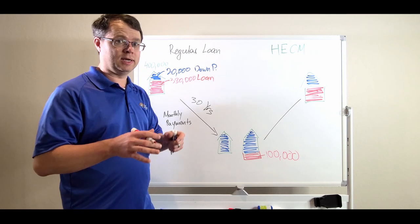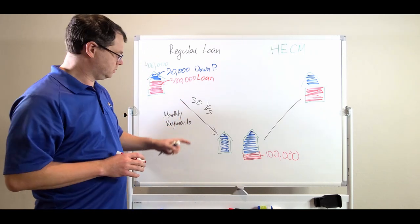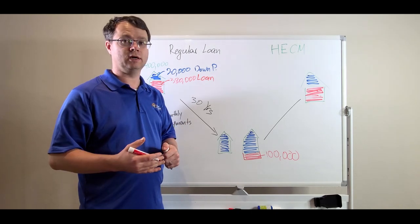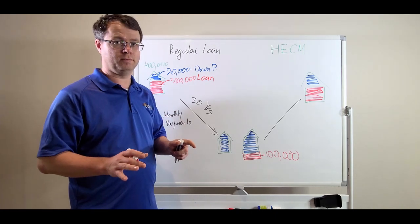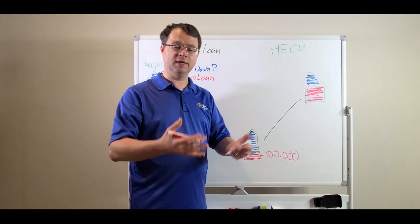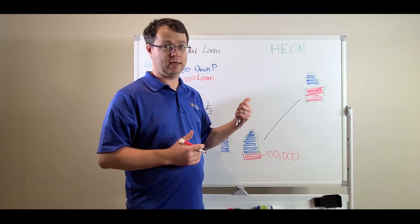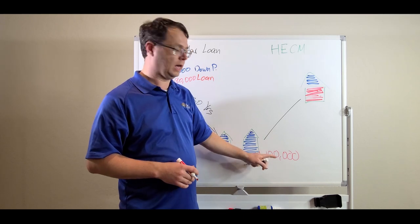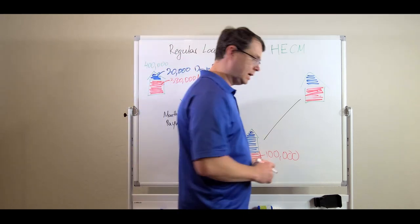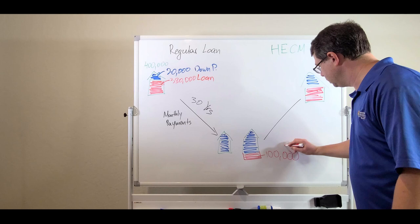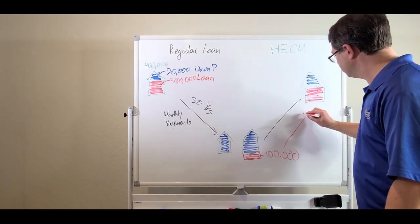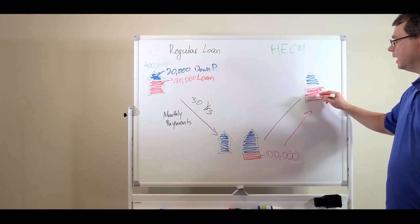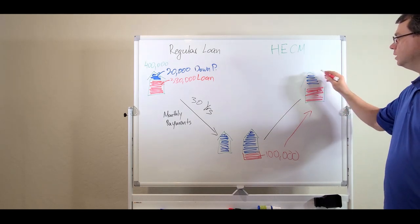Now, with HECM, there are no obligations for monthly payments. You could make payments voluntarily, but you don't have to. Now, every loan has fees, has interest accruing. HECM has the same thing. It has fees and has interest accruing on the amount you took out. So, with time, the loan, if you're not making monthly payment, the loan starts to increase and eat away from the equity of your house.